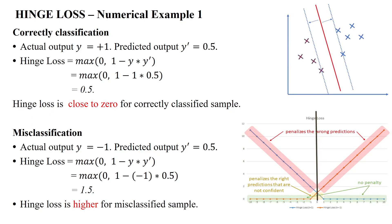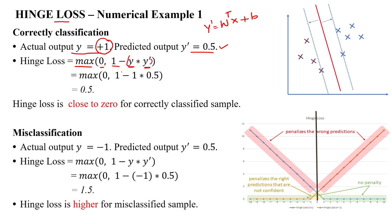Here we will discuss a numerical example for calculating the hinge loss using the SVM classifier. We assume the given dataset has a sample whose actual output is the positive class with value positive 1, predicted as 0.5. Our soft SVM classifier objective function is y' = w transpose x + b, predicted as 0.5. The hinge loss formula is the maximum of 0 and 1 minus (actual output times predicted output).